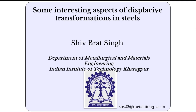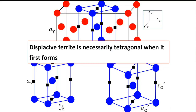Let us start straight away. We have all seen the lattice correspondence between FCC and body-centered tetragonal structure. What I would like to draw your attention to is the octahedral voids that exist in the FCC lattice. There are three octahedral voids per iron atom, but the lattice correspondence between FCC and body-centered tetragonal representation of austenite is such that all the octahedral voids are on only one of the three sub-lattices. After Bain strain, therefore, all the carbon atoms present end up on only one of the three sub-lattices,